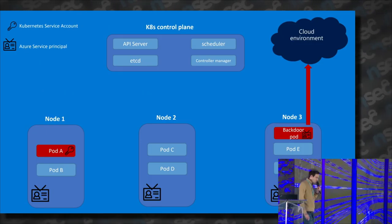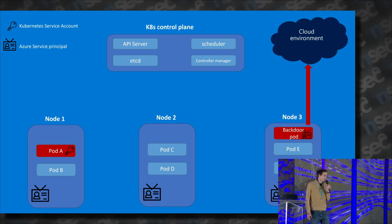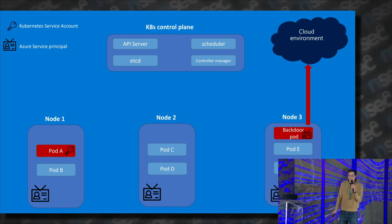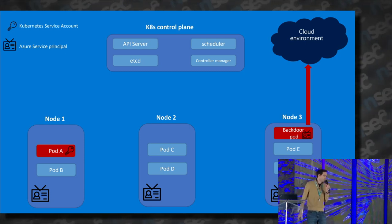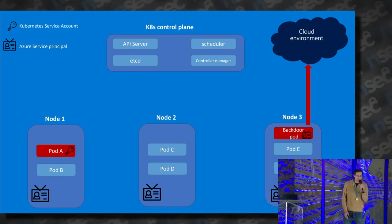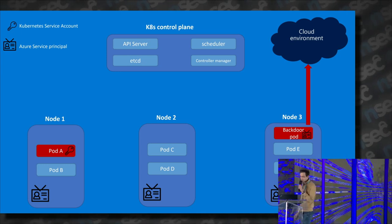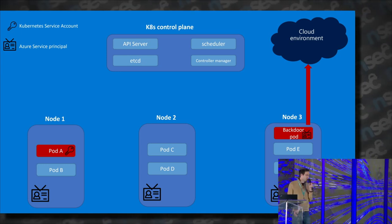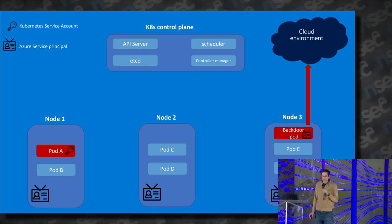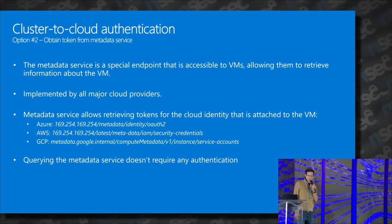The limitation of this method is that it requires the attacker to create a new pod and mount the service principal, which isn't always possible. Also, this method is specific to Azure. Now we're going to see another method that doesn't require any operations with the Kubernetes API server, doesn't require service accounts, and works across other cloud providers as well. This method uses the metadata service.